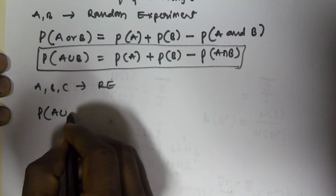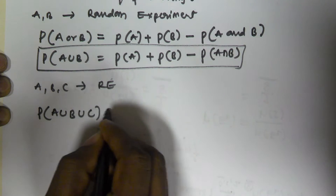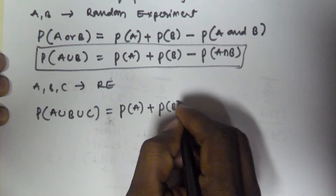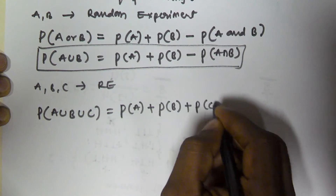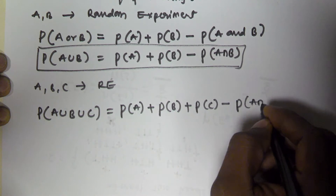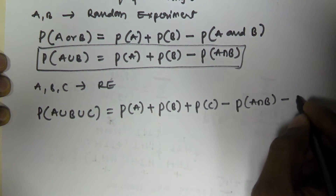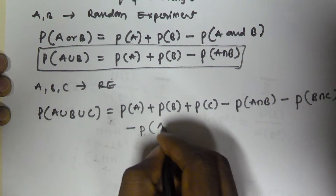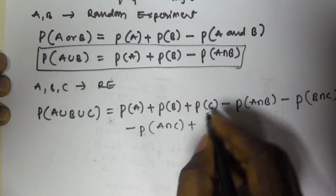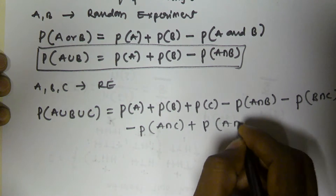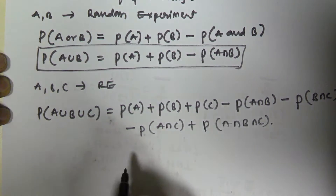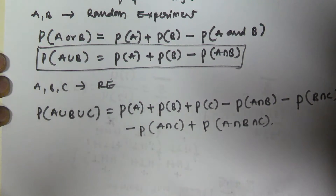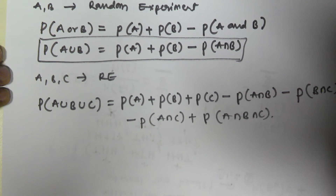The probability of occurring A or B or C is equal to probability of A plus probability of B plus probability of C minus probability of A and B minus probability of B and C minus probability of A and C plus probability of A and B and C together. So this is the addition theorem of three events associated with a random experiment.